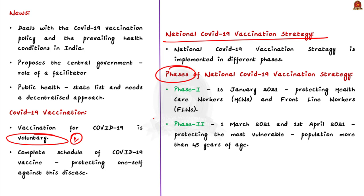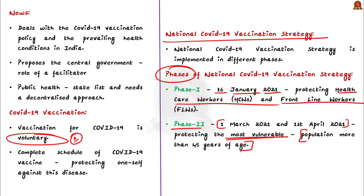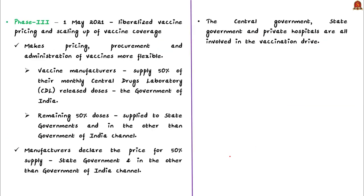Phase three aimed at a liberalized vaccine pricing and scaling up of vaccine coverage to encompass all adults aged above 18. This policy incentivizes vaccine manufacturers to rapidly scale up production and attracts new manufacturers, making pricing, procurement, and administration more flexible. This liberalized pricing and accelerated national COVID-19 vaccine strategy came into effect from May 1st, 2021. Under this strategy, vaccine manufacturers supply about 50% of their monthly central drug laboratory released doses to the Government of India, while the remaining 50% are supplied to state governments and other channels — primarily the private hospital network. Manufacturers declare the price for the 50% available to states and private hospitals.